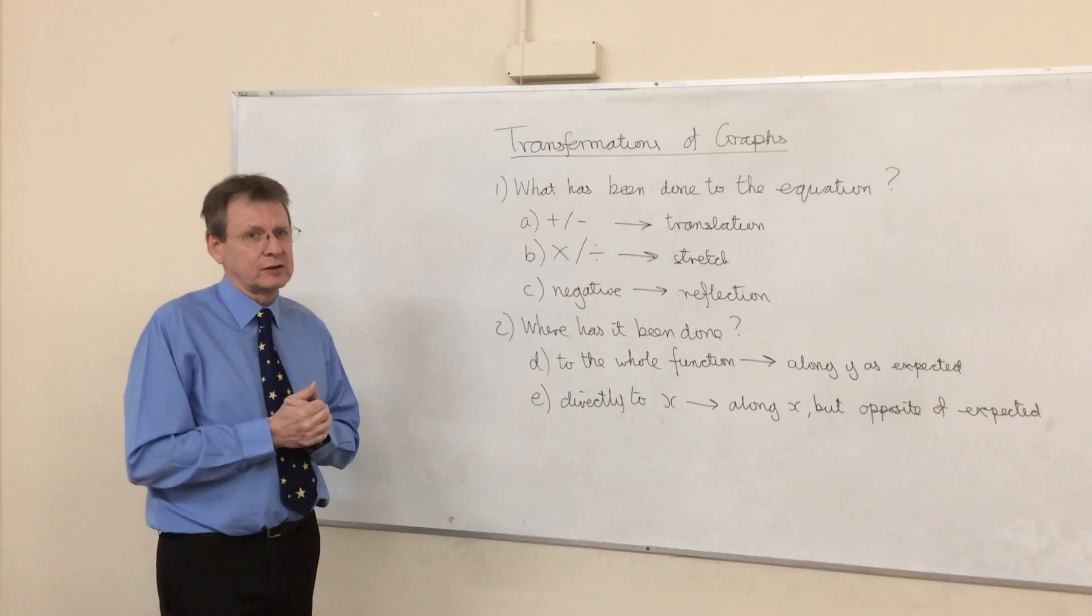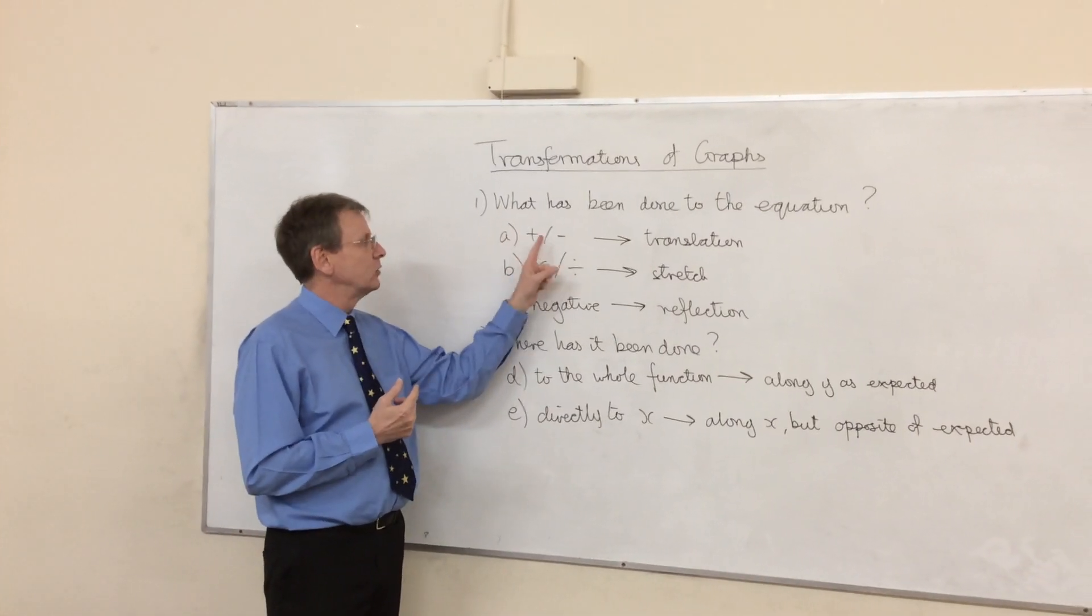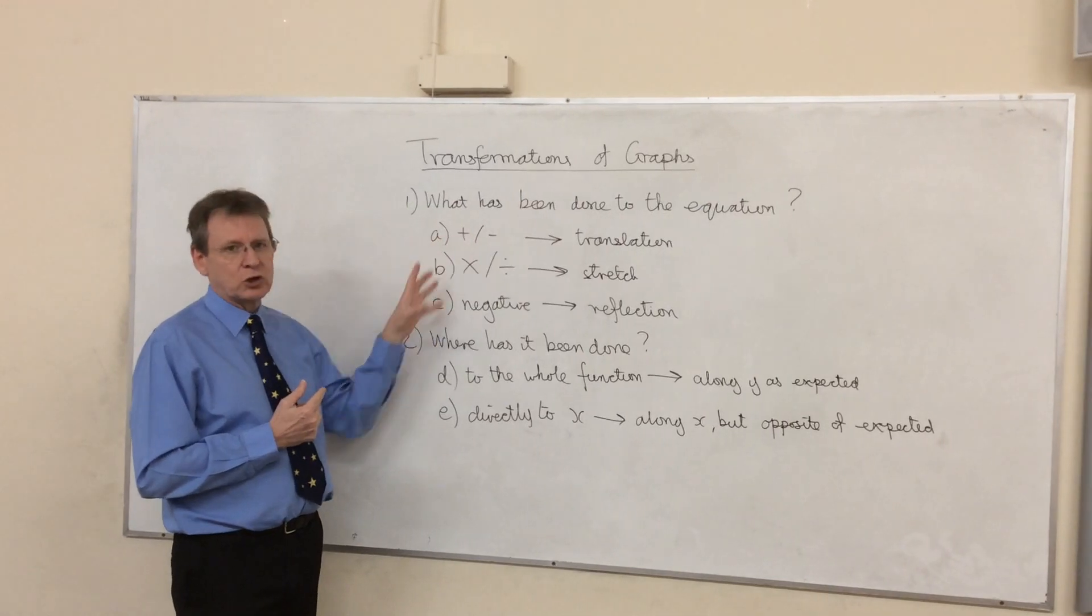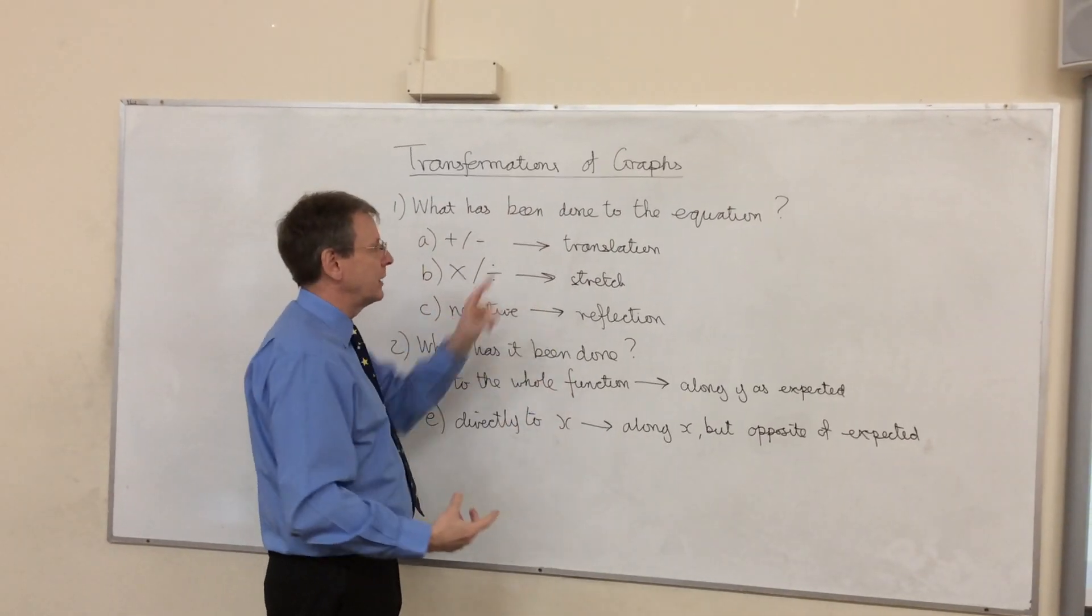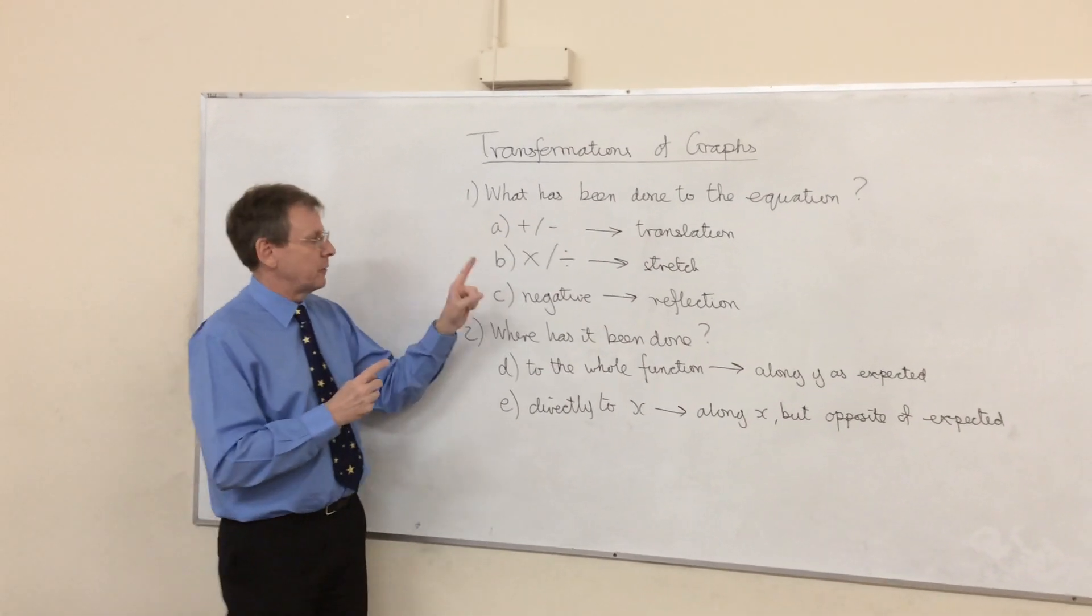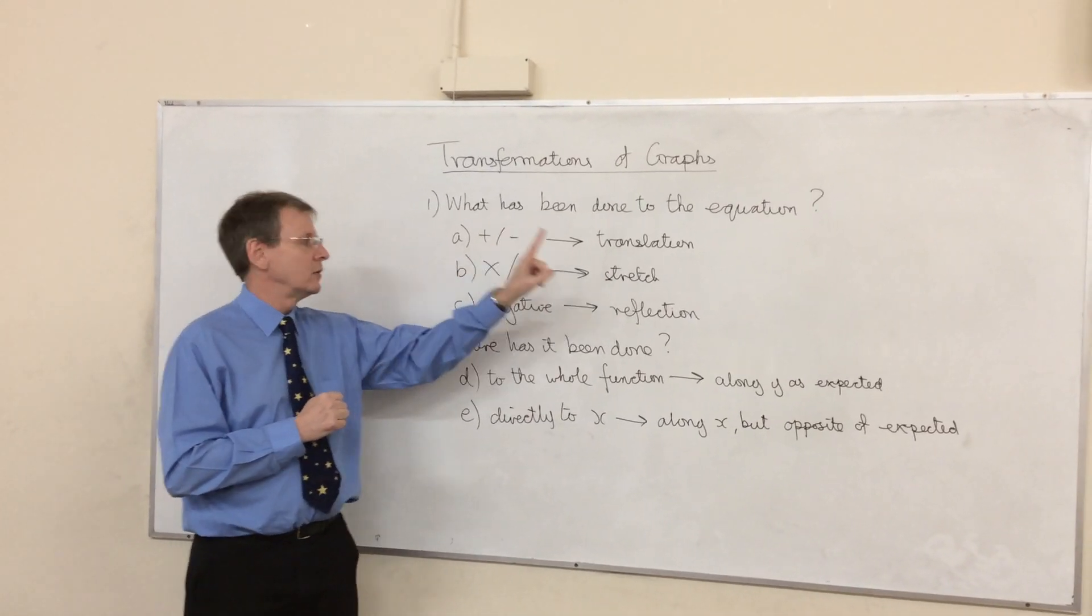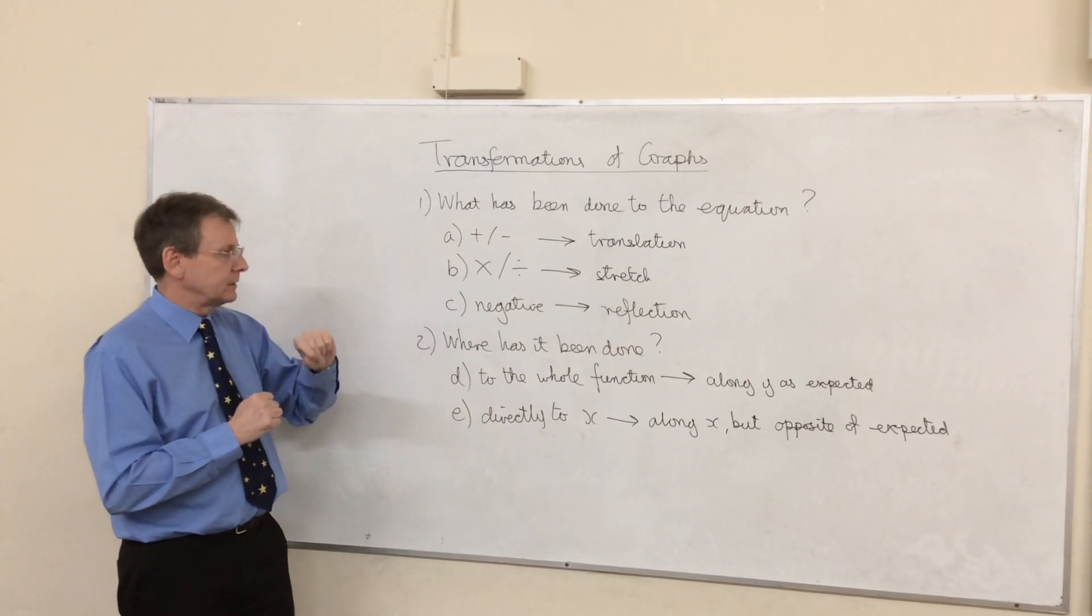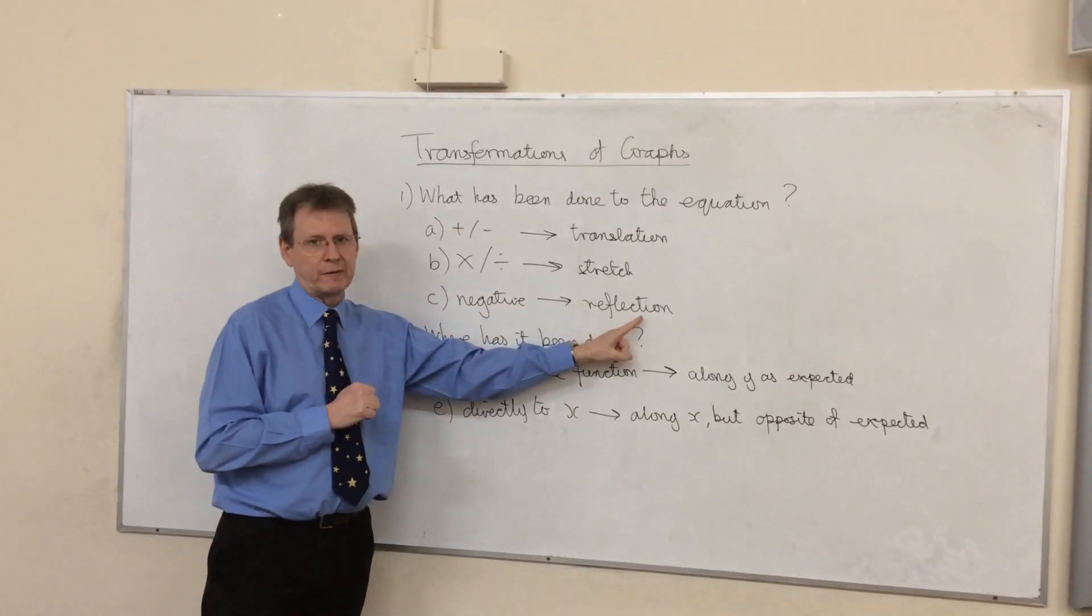And there are three potential answers to that question. The first one, that it's been changed by adding or subtracting a number. If a number has been added or subtracted, if there's been an added number or subtracting number included in the equation, then we know it's going to be a translation. If, however, the equation has been changed by times or divided by a number, then we know it's going to be a stretch. And if they put a negative in front of something, we know it's going to be a reflection.